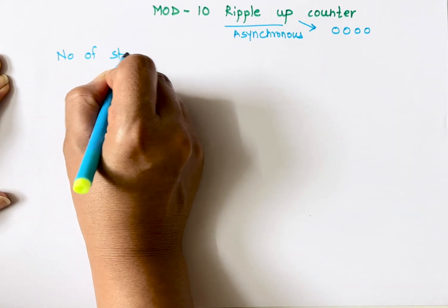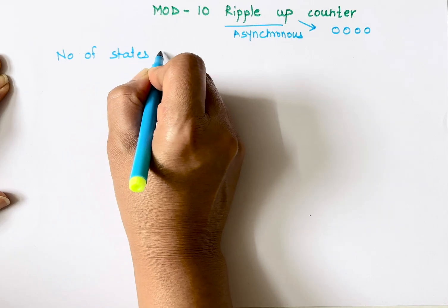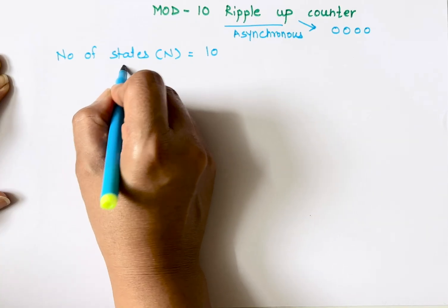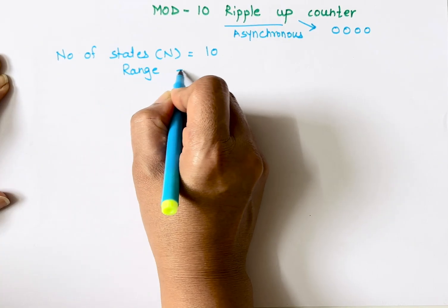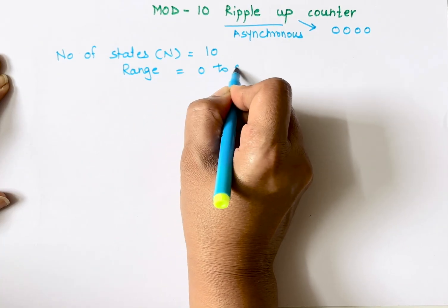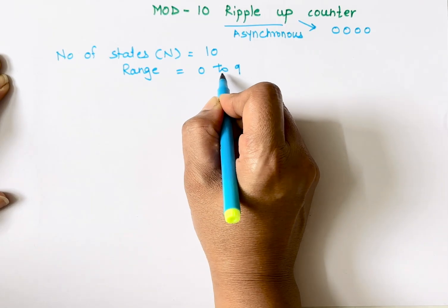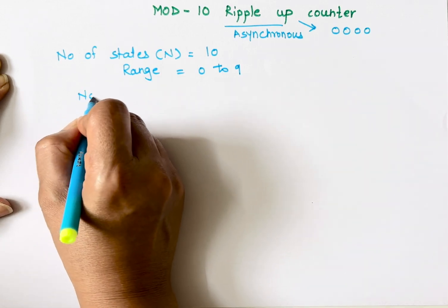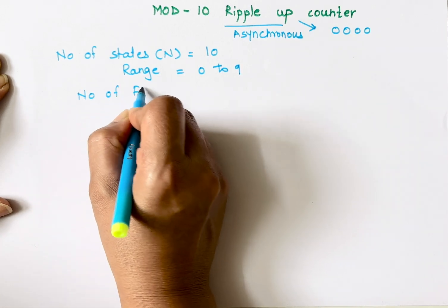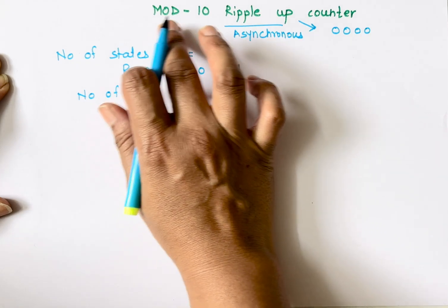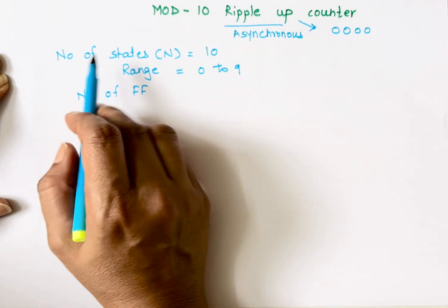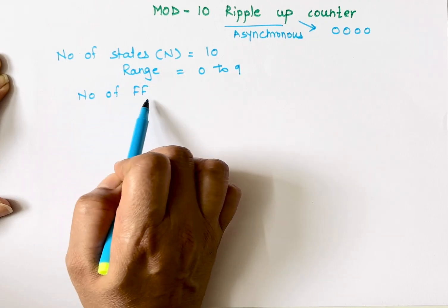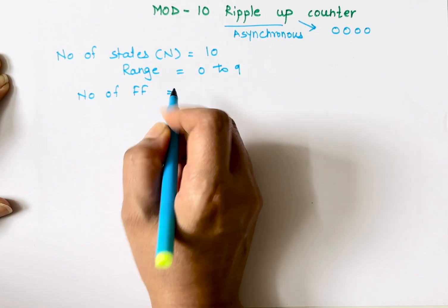This is a Mod 10 counter, which means the number of states is 10, represented by capital N. The range of counting is from 0 to 9. It will start counting from 0 and go up to 9. In an exam, if the question is to design a Mod 10 counter, you need to write three steps: first, number of states; second, range; and third, number of flip-flops.